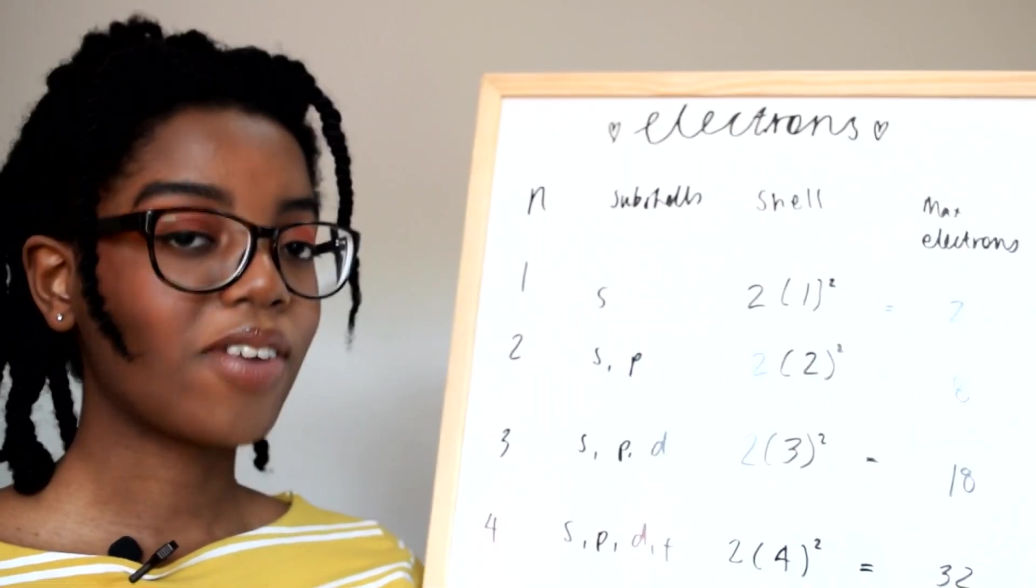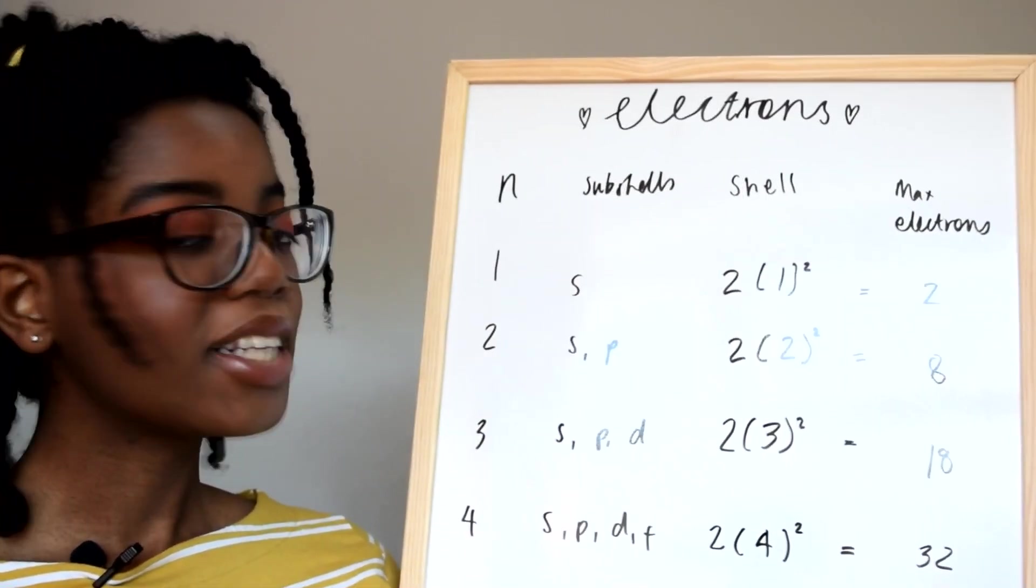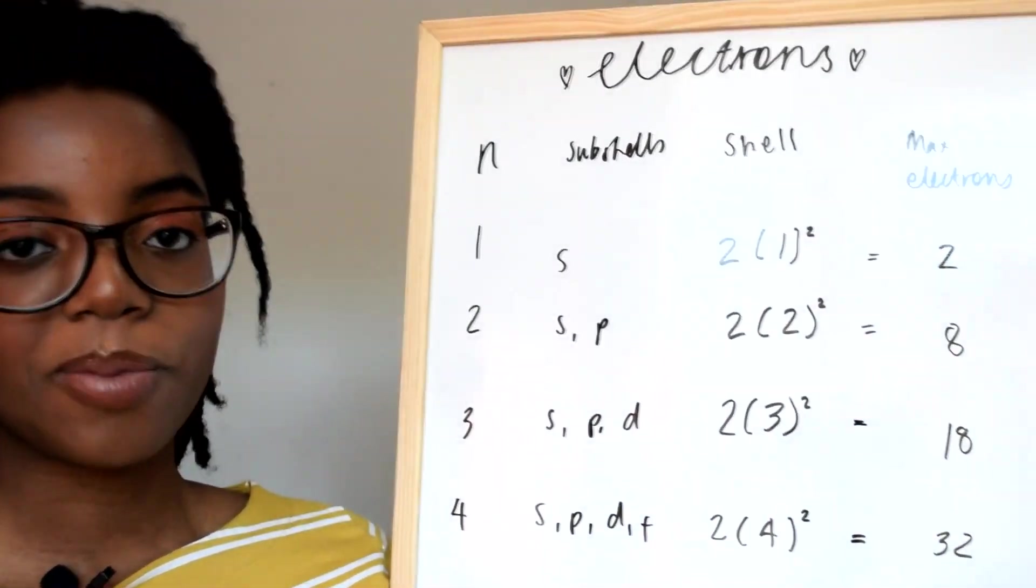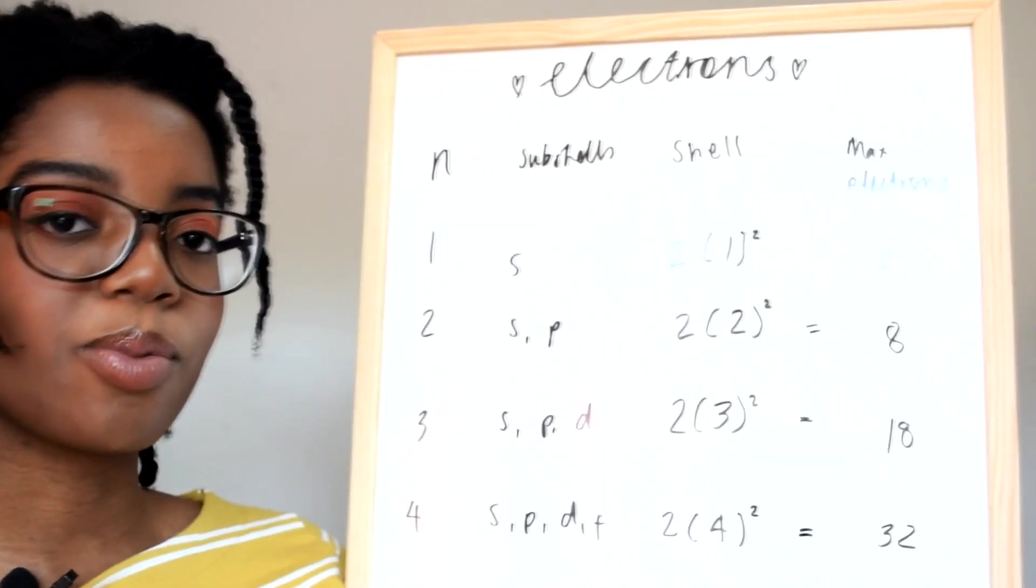With two electron subshells you'd have S and P, so that would mean you'd have a calculation of 2 times 2 squared to get eight maximum electrons.